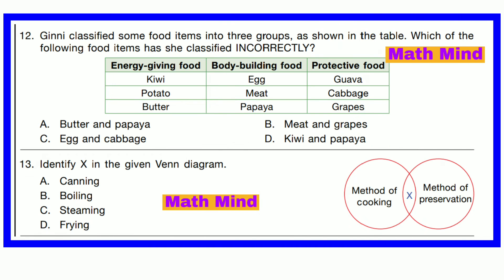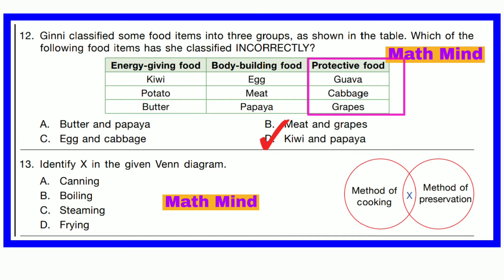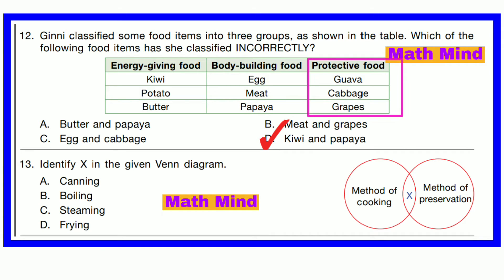Question number 12. Guinea classified some food items into three groups as shown in the table. Which of the following food items has she classified incorrectly? Option D is correct: Kiwi and papaya. Kiwi is a fruit, so it is a protective food, not energy-giving food. Papaya is also a fruit, so it is also protective food, not body-building food.